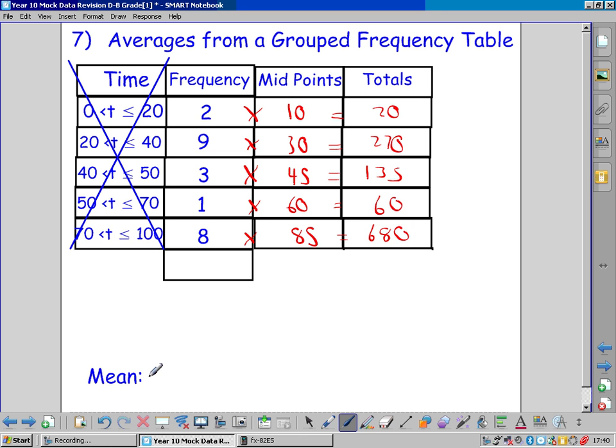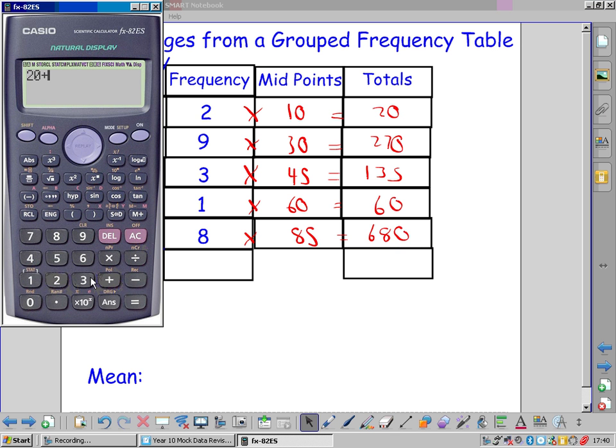To find the mean, we need the total divided by how many there are. So we need to add up all our totals. 20 plus 270, plus 135, plus 60, plus 680, 1165.